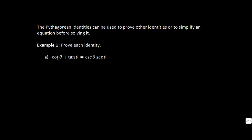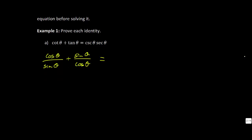The first example: prove that cotangent theta plus tangent theta equals cosecant theta times secant theta. I'm going to take the more complicated side — the left-hand side — and write it in terms of only cosine and sine. Cotangent of theta equals cosine theta over sine theta, and tangent is sine theta over cosine theta. I won't touch the right-hand side at all. The next step is to get a common denominator, which will be sine theta times cosine theta.